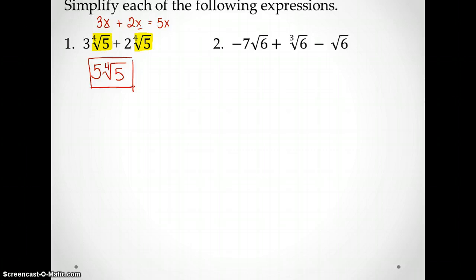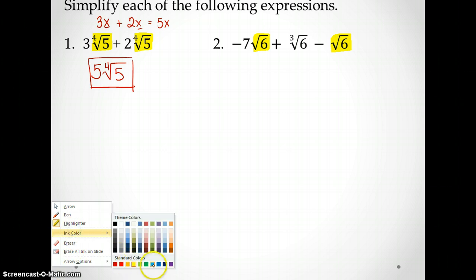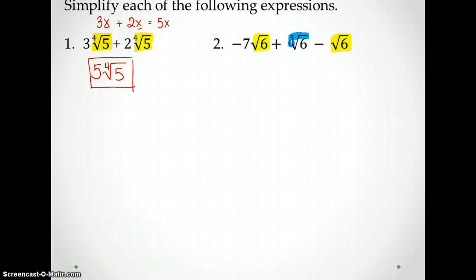On number 2, you'll notice that we actually have two different types of radicals. And this is where sometimes you got to slow down and really pay attention. I have square roots of 6, but I also have a cube root of 6 in here. Can I put together a cube root with a square root? We can't. So that means that even though I simplify this, I'm going to have two terms in my answer.